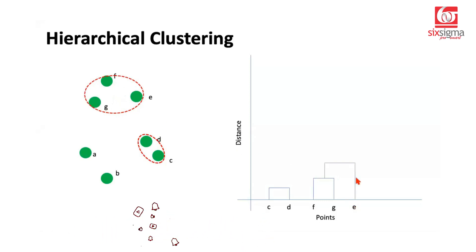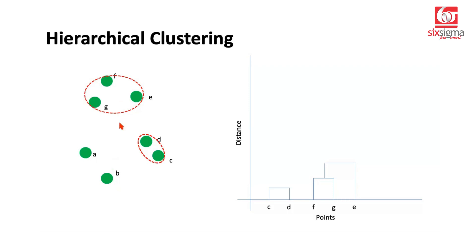When E is joined to cluster F,G, you end up getting a bigger cluster accommodating all these points, and the same event is represented on the graph. Now the possibilities are joining a point to a point or any of these points to any of these clusters, and we choose the shortest distance. In this case, A and B seem closer to each other compared to the existing clusters, so let's join these two points, which forms another cluster represented on the graph.